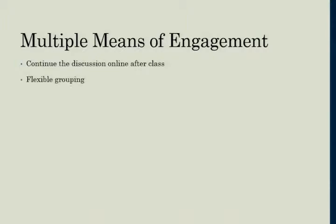Flexible grouping — finding ways for students to work with a partner, a small group, or a large group, and moving from large to small to partner to alone and back again during class. Having them choose. Talking it out strengthens neurological pathways: you've heard it, you've read it, you've talked it out — that's three different ways you've reinforced that collection of neurons.